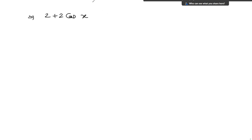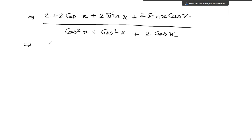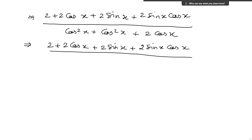So we have: 2 plus 2 cos x plus 2 sin x plus 2 sin x cos x in the numerator, divided by 2 cos squared x plus 2 cos x in the denominator.